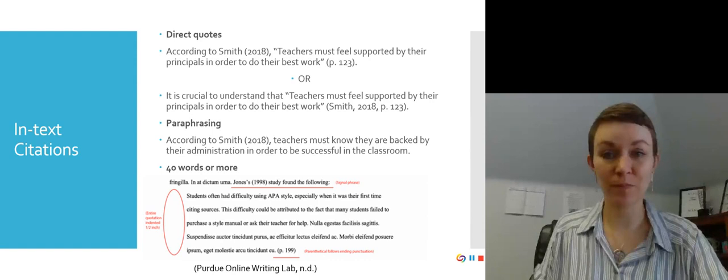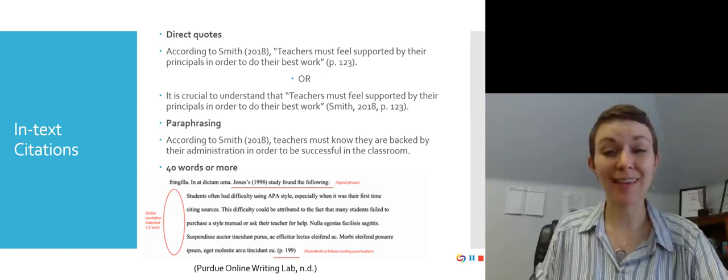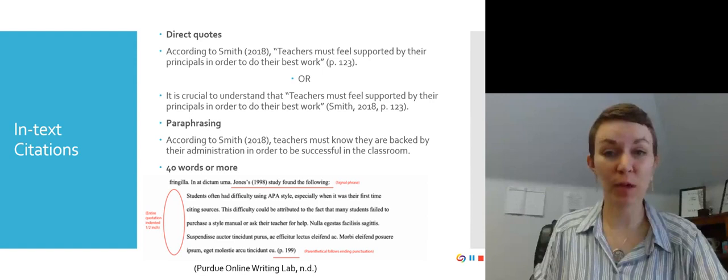In the first example, we have direct quotes. So this is when you are taking the exact language from a researcher or an author, and you are quoting it in your paper. You can either split the citation, as you see in the first example, because you have Smith, the author's name, in the signal phrase. Or if you don't have the author's name in the signal phrase, you can keep everything together in the citation at the end.